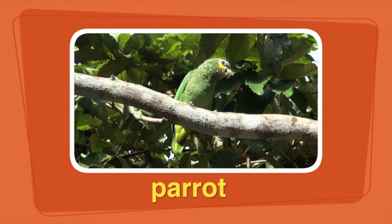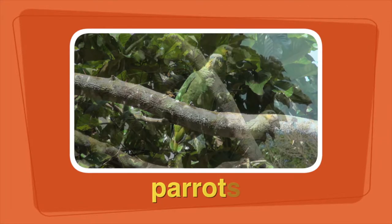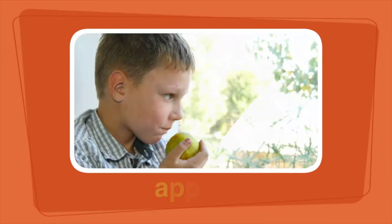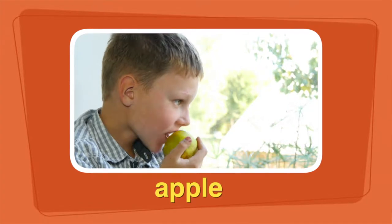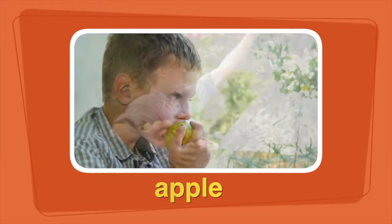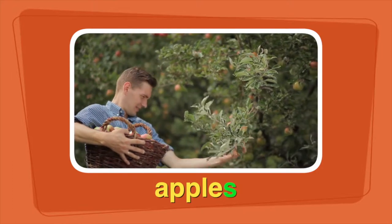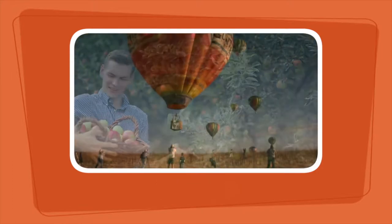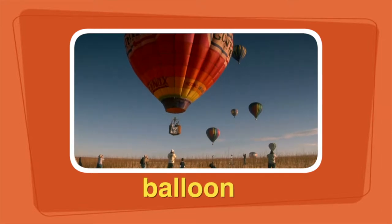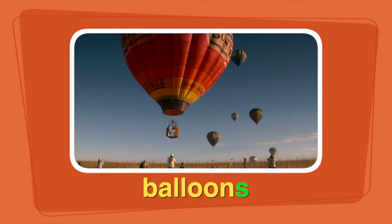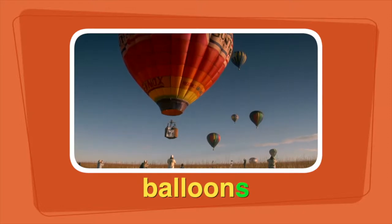There is one parrot sitting on a limb. Now there are two parrots sitting on a limb. The boy is eating an apple. The man is picking apples. The balloon floated into the sky. The balloons floated into the sky. Adding S to the end of many nouns makes them plural.